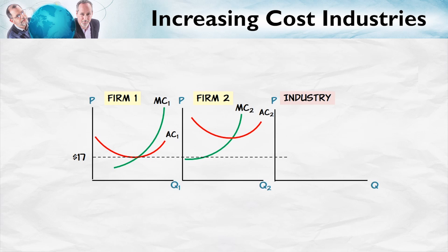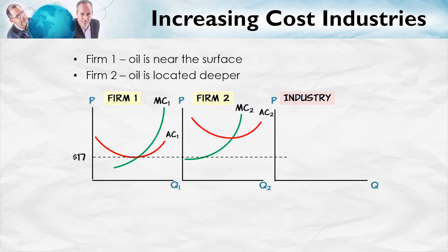Let's show how the industry supply curve is derived from the entry, exit, and cost curves of individual firms. We can do this for an increasing cost industry with just a two-firm example. Suppose firm one is a producer of oil where its oil is very close to the surface, so it has a quite low average cost curve — it's cheap for this firm to produce oil. Firm two, on the other hand, has a much higher average cost curve because it must drill much deeper to get oil. Given these figures, what's the industry supply curve if the price of oil is below $17?